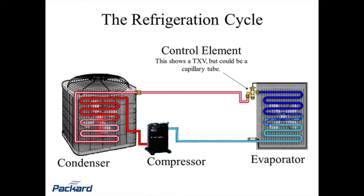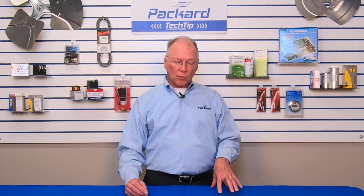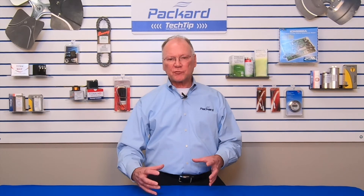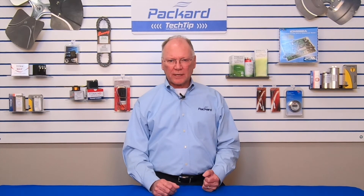That color change indicates a reduction in pressure. The capillary tube or TXV reduces the pressure of the refrigerant as it goes into the evaporator. Then the refrigerant, as it's going through the evaporator, continues through and ultimately returns back to the compressor. That's on a typical air conditioning system.